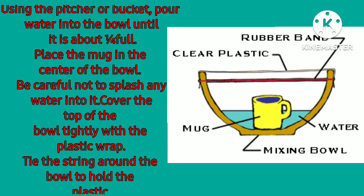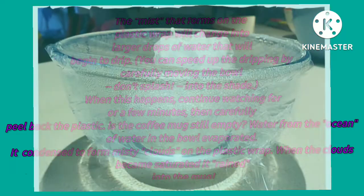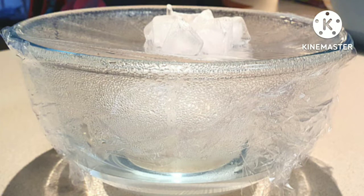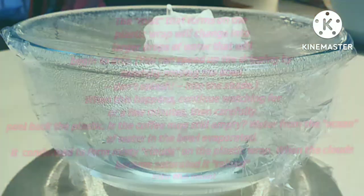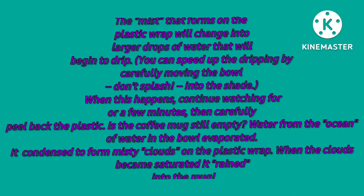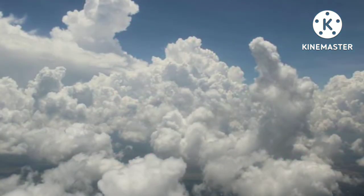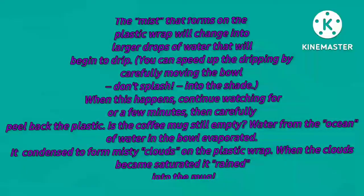Watch the bowl to see what happens. The mist that forms on the plastic wrap will change into larger drops of water that will begin to drip. When this happens, continue watching for a few minutes, then carefully peel back the plastic wrap. The water from the bowl evaporated, then condensed to form misty clouds on the plastic wrap, and when the clouds became saturated, it rained into the mug.